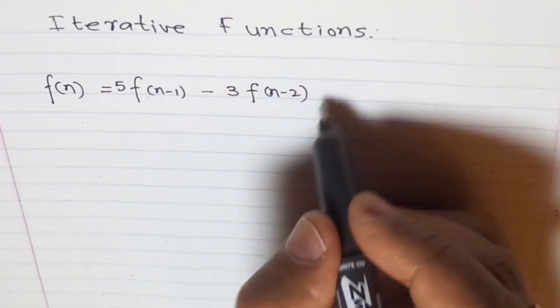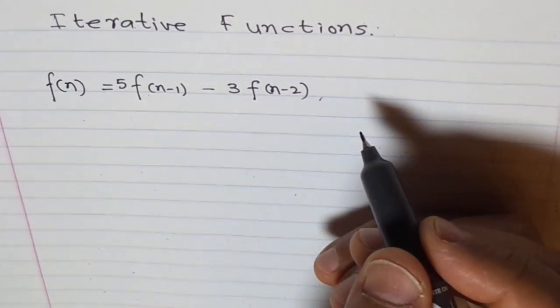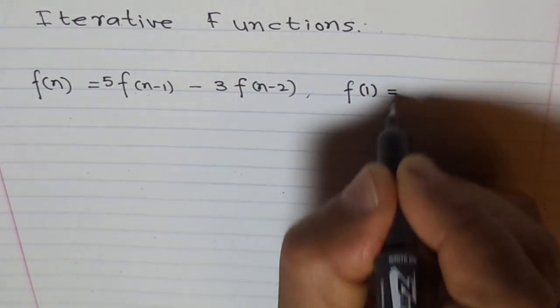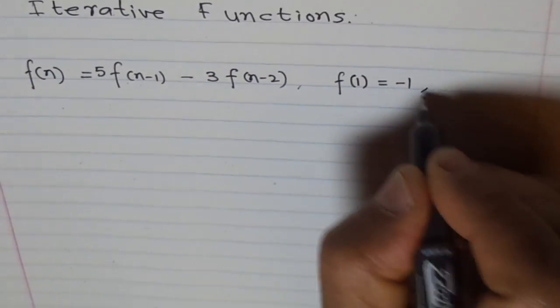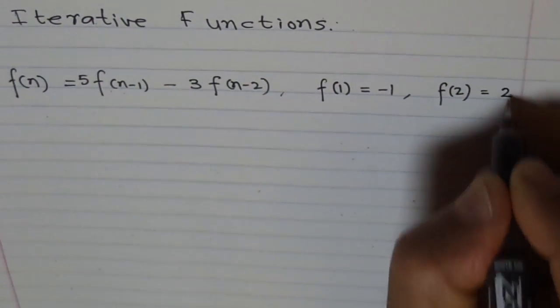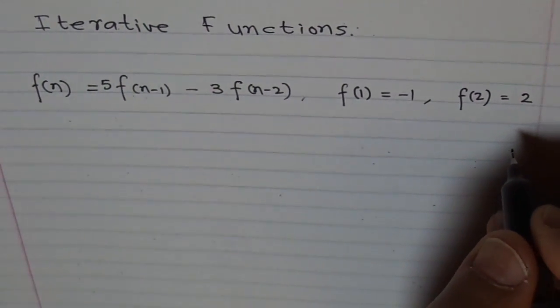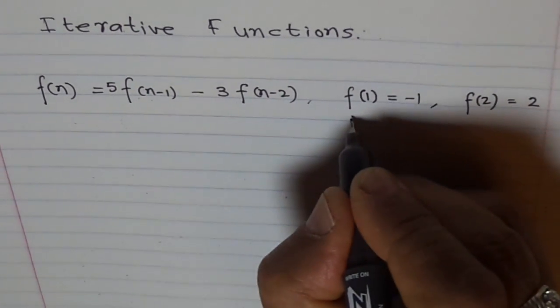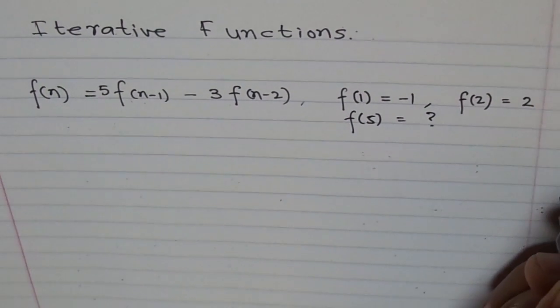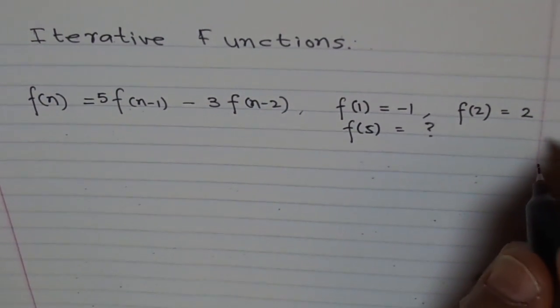We should know at least two values to start with. So let f(1) be equal to -1 and f(2) equals 2. And let us say we need to find f(5). So f(5) is what we will try to calculate.